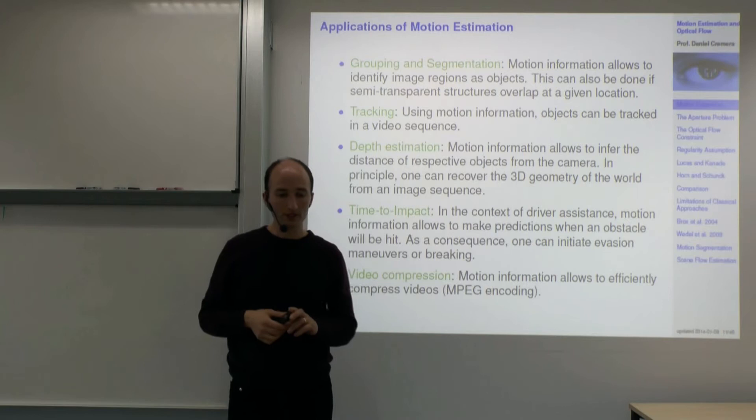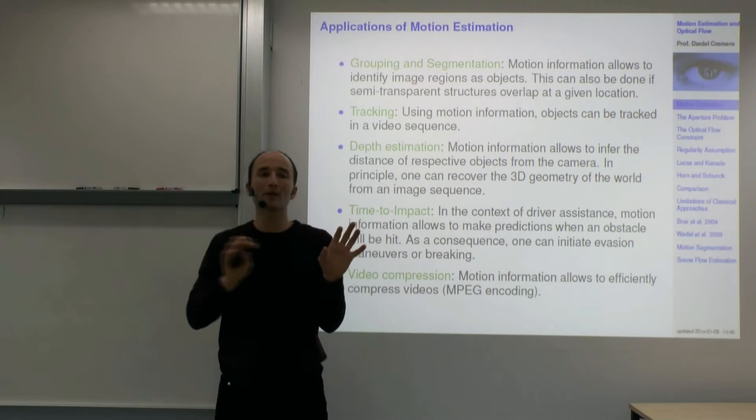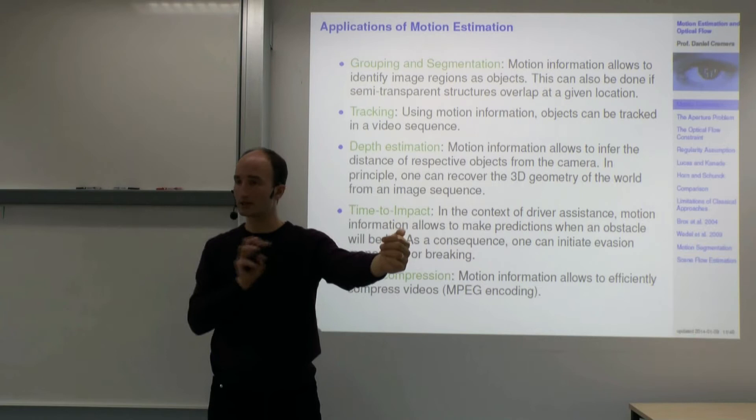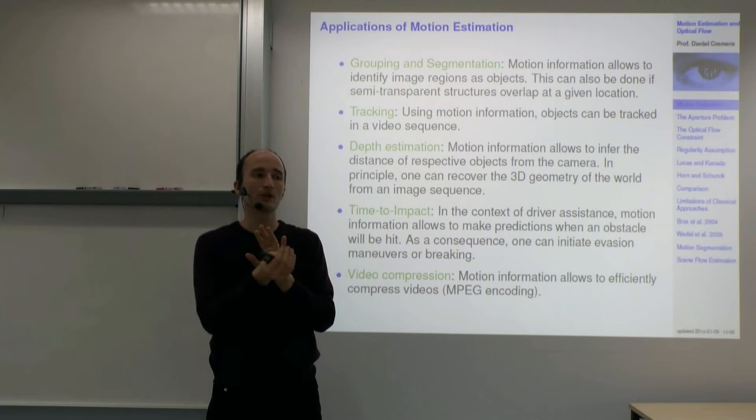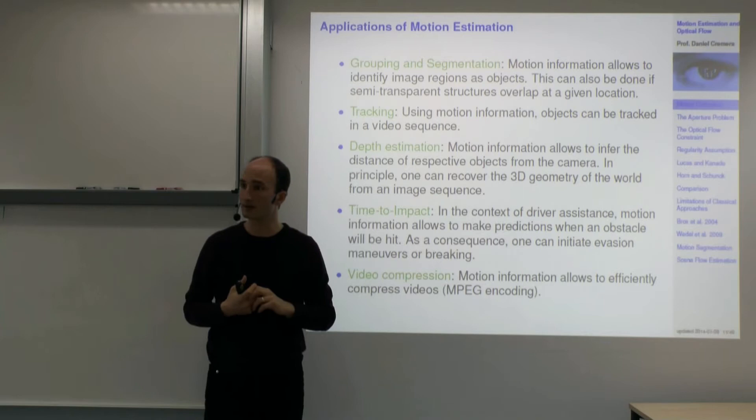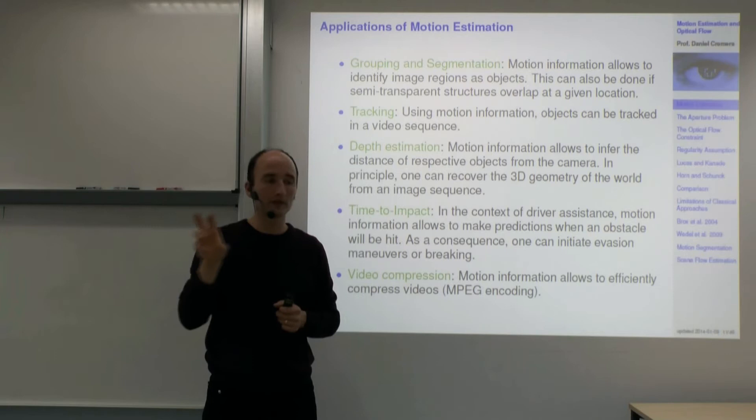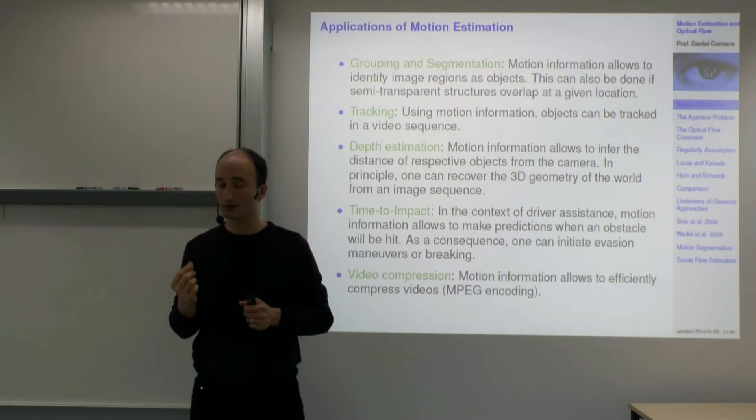You can track objects — following an object over a video is called tracking, where you associate points in one image with points in the next to keep track of where the object is moving. Motion is also used in depth estimation from stereo: if you have a moving camera and a static world, from the perceived motion of things you can infer their depth from the camera.